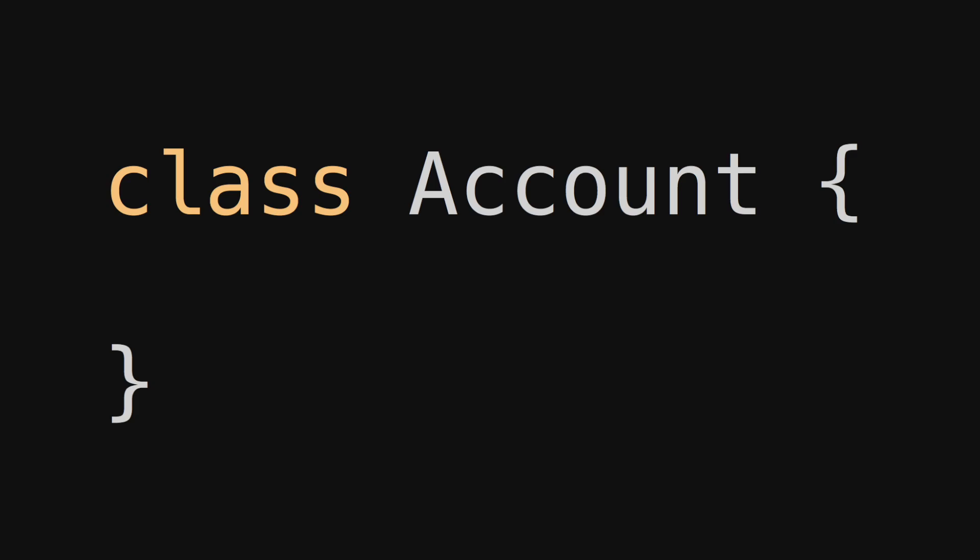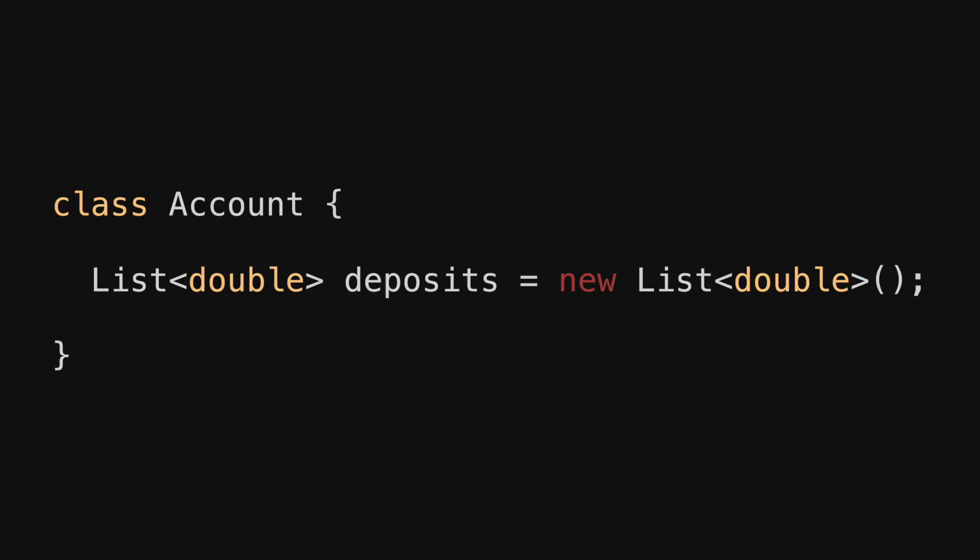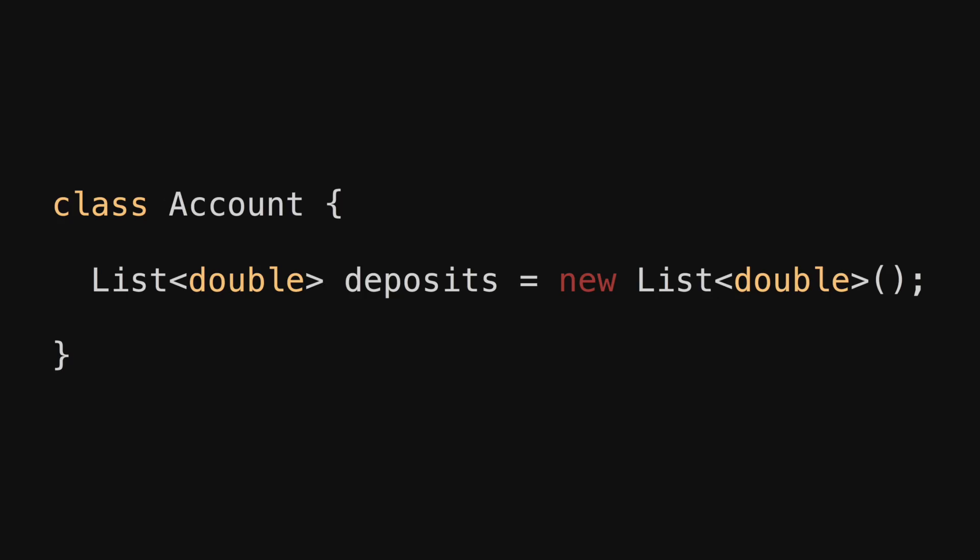But consider the following. Say that we're building some kind of banking system, and that in our banking system we have an account class. It's an oversimplified example, but assume that we, in this account class, have a collection that contains deposits. It's oversimplified because in a real-world scenario you would of course probably use some kind of object to represent a deposit. But in this case, we're just going to use a primitive — deposits are represented by numbers, in other words, the amount actually deposited.